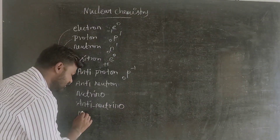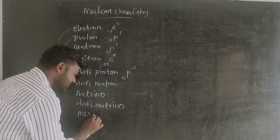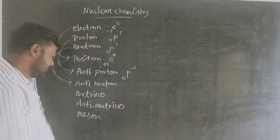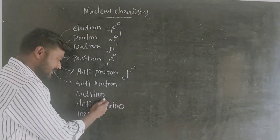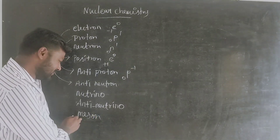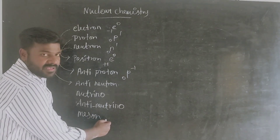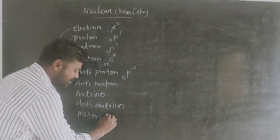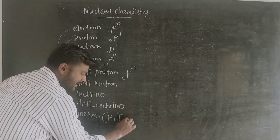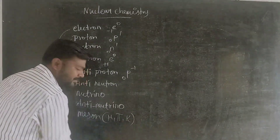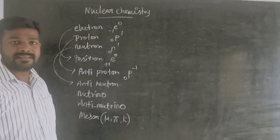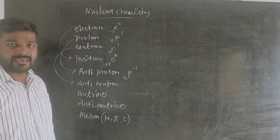If you look at the meson, the charged particles are the same. Meson is the moon type of meson — mu meson, pi meson, k meson. These are moon-type particles. Meson is mu, pi, k.